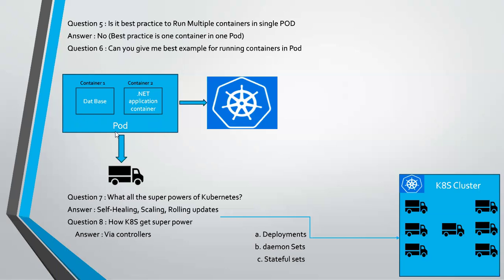Another example: imagine a truck. The truck carries goods from one place to another. In the same way, a pod can have multiple applications — a database, an application, an API — all as containers. The pod acts as a truck, taking care of moving those containers from Docker into the Kubernetes cluster.